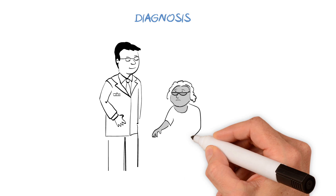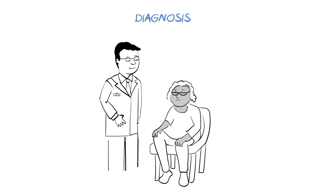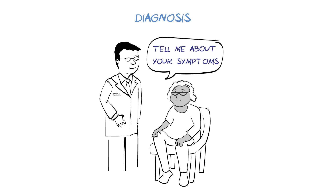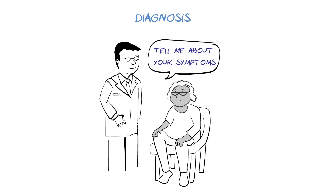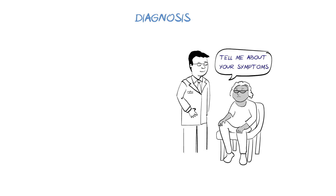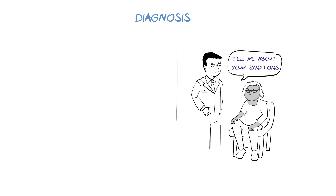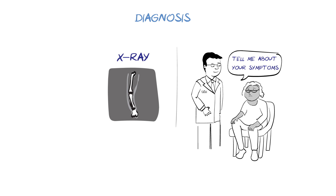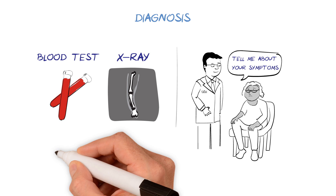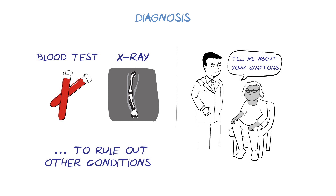Your doctor can usually diagnose osteoarthritis just by hearing about your symptoms. If they are not sure about what is causing the joint pain, they may use imaging and lab tests, such as x-rays or blood tests, to rule out other conditions such as other types of arthritis.